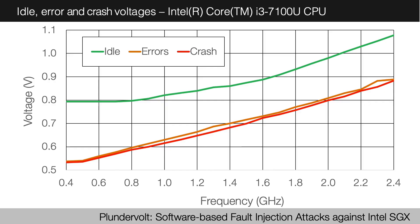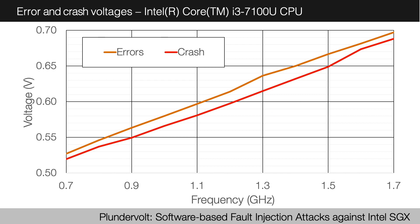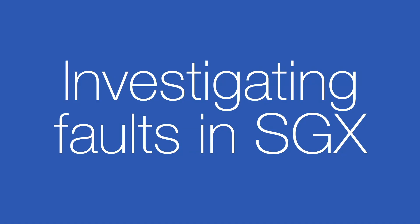We plotted our results on a graph and found that frequencies in the middle of the CPU's available frequency range were much more stable. At very low or very high frequencies, you were much more likely to get a crash than a fault. For this particular i3 machine, we focused at 1 gigahertz as we found it to be the most stable. Now, it's all very well creating multiplication faults in user space, but you have to be root to control the voltage. Intel's TEE is called SGX — Software Guard Extensions.